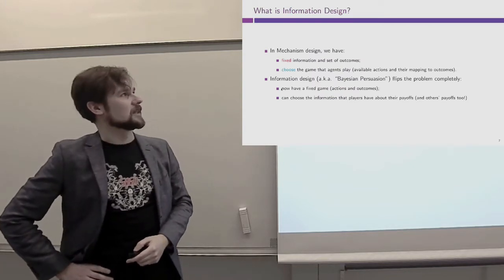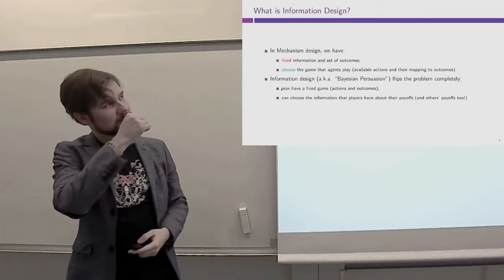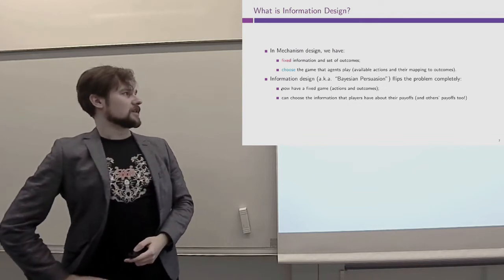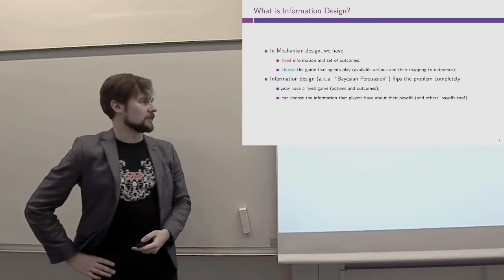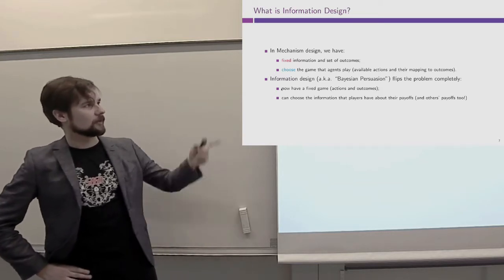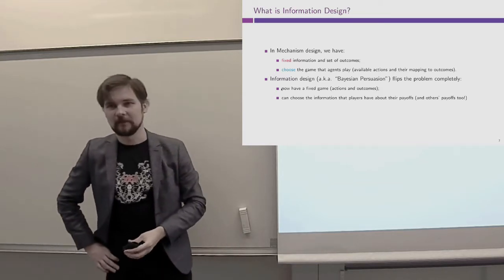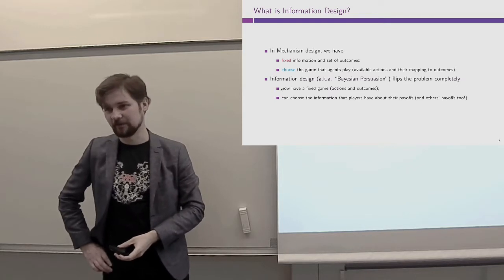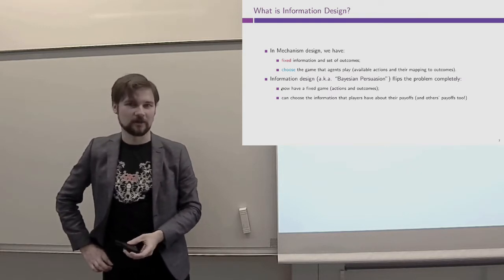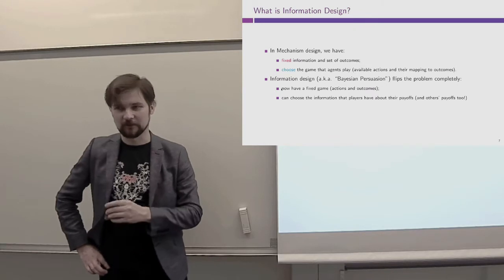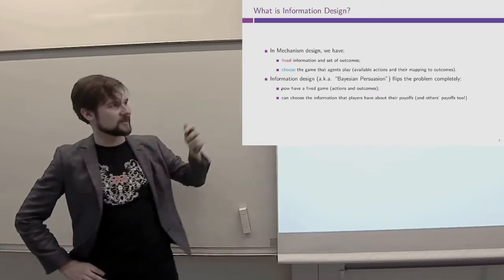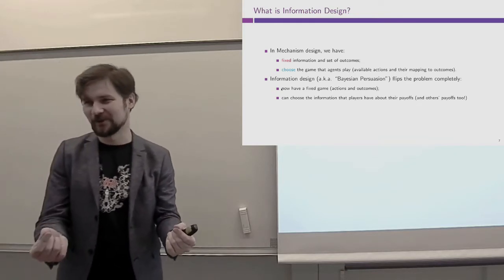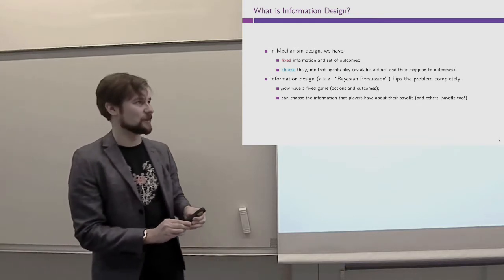So to summarize: in mechanism design we have fixed information and outcomes and we choose the game; in information design we fix the game and select the information. An alternative name by which information design often goes is Bayesian persuasion — this is another moniker frequently used, and it relates to the two different approaches that exist in the literature.